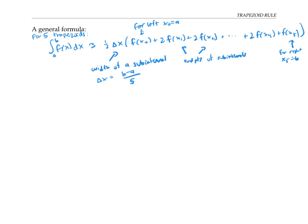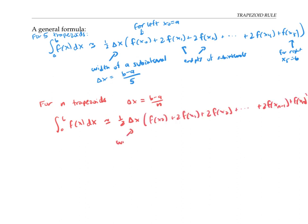More generally, if we want to use N trapezoids, then we use subintervals of width B minus A over N and we approximate our integral using a similar formula. Again, delta X represents the width of a subinterval. And these Xi's are the endpoints of the subintervals. Notice that we have the number 2 multiplied by each of these terms except for the very first one and the very last one.